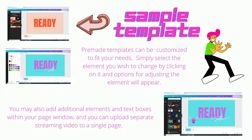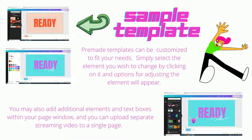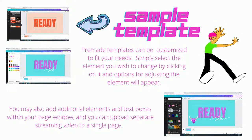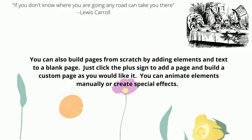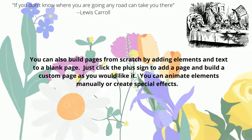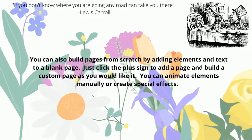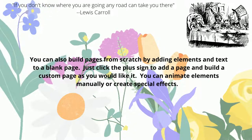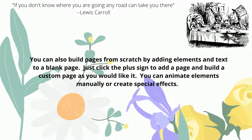You may also add additional elements and text boxes within your page window, and you can upload separate streaming video to a single page. You can also build pages from scratch by adding elements and text to a blank page. Just click the plus sign to add a page and build a custom page as you would like. You can animate elements manually or create special effects.